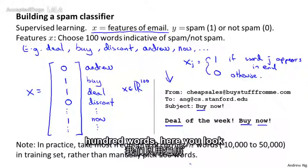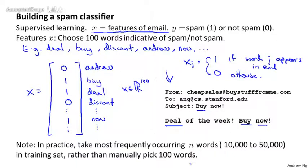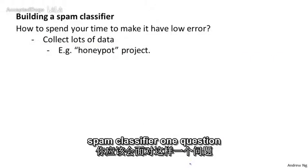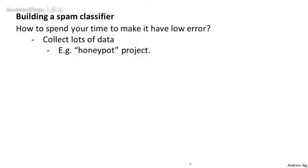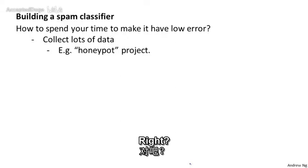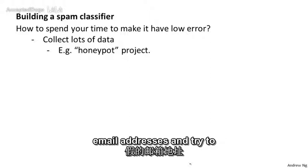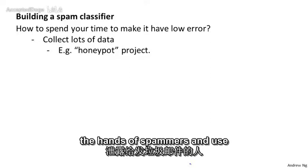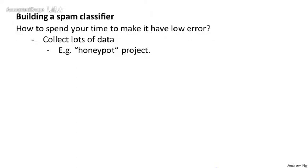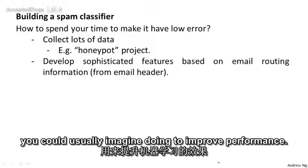So rather than manually picking 100 words, you look through the training examples and pick the most frequently occurring words — like 10,000 to 50,000 words — and those form the features you're going to use to represent your email for spam classification. Now if you're building a spam classifier, one question you may face is: what's the best use of your time in order to make your spam classifier have high accuracy or have low error? One natural inclination is to go and collect lots of data. In fact, there are serious projects called honeypot projects which create fake email addresses and try to get them into the hands of spammers to collect tons of spam data to train learning algorithms on. But getting lots of data will often help, but not all the time, and for most machine learning problems there are a lot of other things you could usually imagine doing to improve performance.